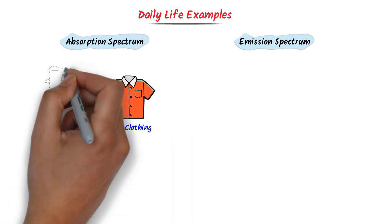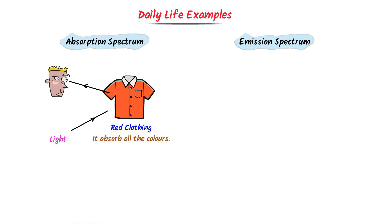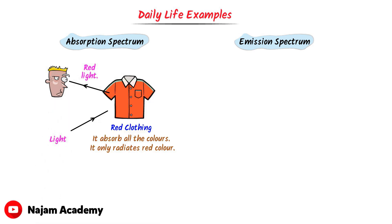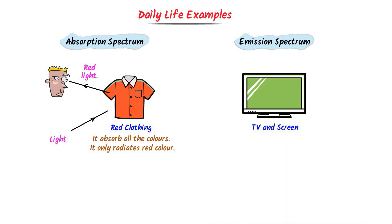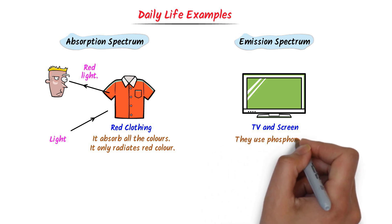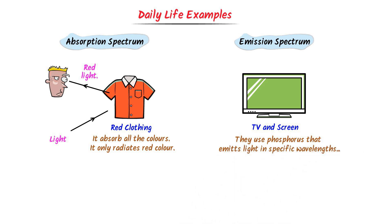Now let me give some daily life examples. An example of absorption spectrum is colored objects and clothing — when you see a red shirt, the fabric absorbs all colors of light except red, and the red wavelengths are reflected back to your eyes. An example of emission spectrum is TV and computer screens, which use phosphors or LEDs that emit light at specific wavelengths to create colors on the screen.